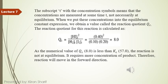When we put these concentrations into the equilibrium constant expression for H2 + I2 ⇌ 2HI, we put in the values and we get another value. What do we call this? We call it the reaction quotient, denoted by QC. The reaction quotient for this reaction is calculated by writing the expression, inserting the concentration values, and the numerical value of QC comes out to be 8.